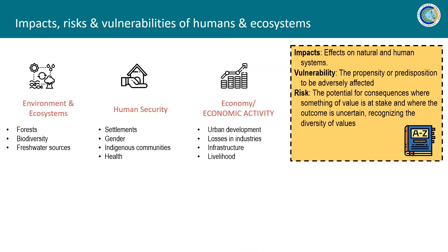For adaptation — impacts, risks, and vulnerabilities of humans and ecosystems — we're zooming in on three sectors and issues: environment and ecosystems like forests, biodiversity, and freshwater sources; human security in terms of communities and health; and economy or economic activity in terms of urban development, losses in industries, infrastructure, and livelihood. As a quick recap: impacts are the effects on natural and human ecosystems; vulnerability refers to propensity or predisposition to be adversely affected; and risks refer to the potential for consequences where something of value is at stake and the outcome is uncertain.